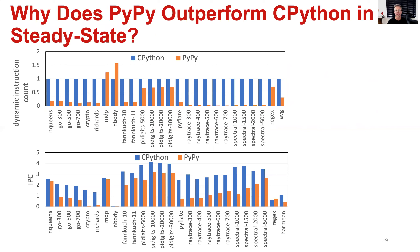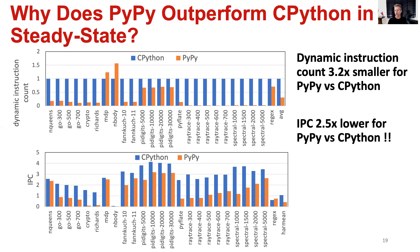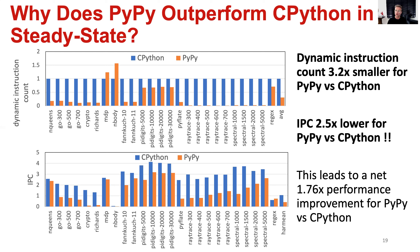Why does PyPy outperform CPython for steady state performance? We look at dynamic instruction count — the top graph — and IPC — the bottom graph. Dynamic instruction count is 3.2 times smaller for PyPy versus CPython on average, and for many benchmarks the decrease is dramatic. Interestingly, IPC is 2.5 times lower for PyPy versus CPython, which is quite surprising for a dynamic JIT compiler. The improvement in dynamic instruction count offsets the decrease in IPC, leading to a net performance improvement for PyPy versus CPython.